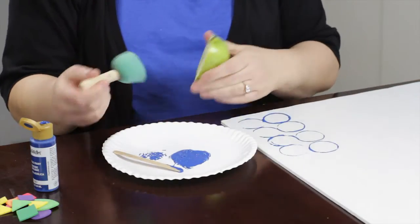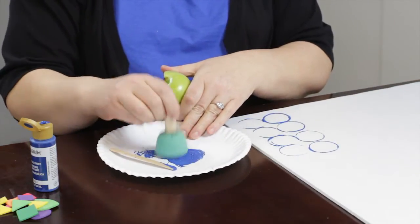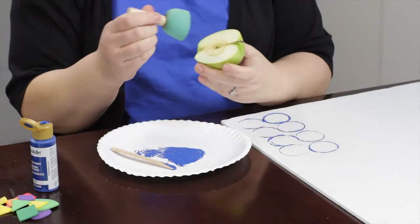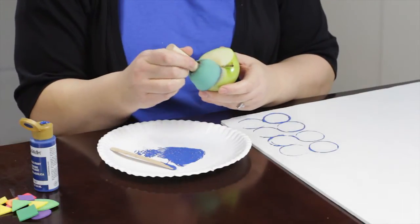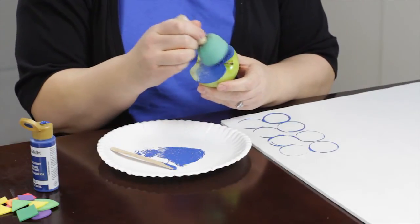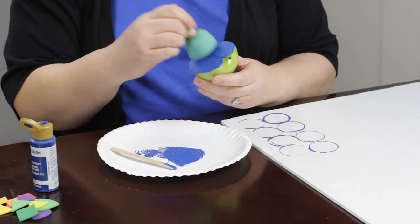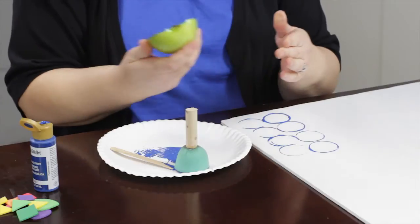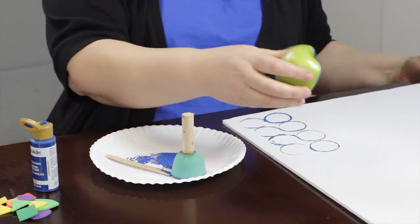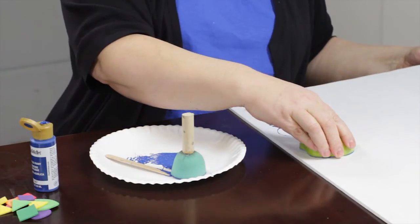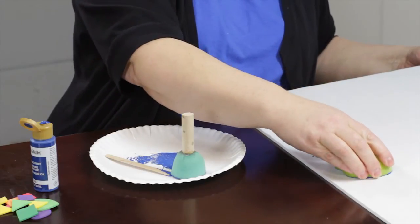So it's a little easier sometimes to get some kind of a paint brush or a pouncer like this and actually load your stamp with that. Then you can use that as a stamp.